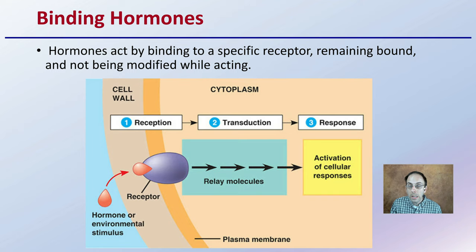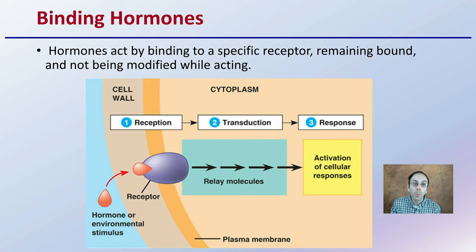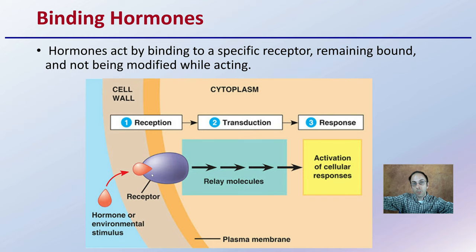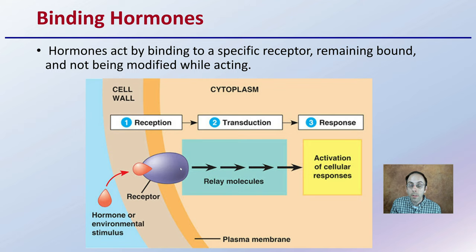Regarding the binding of hormones, hormones act by binding to a specific receptor, remaining bound and not being modified when acting. Though plant hormones are active in very small amounts, the hormone binds to a receptor on the plant cell, and a transduction pathway occurs involving many relay molecules. Think of this as a pyramid of dominoes — knocking one over triggers the whole cascade — resulting in activation of many different pathways and cellular responses in both this cell and potentially neighboring cells. That one hormone binding to one receptor can cause this amplified effect, which is why they can be active even at very low concentrations.